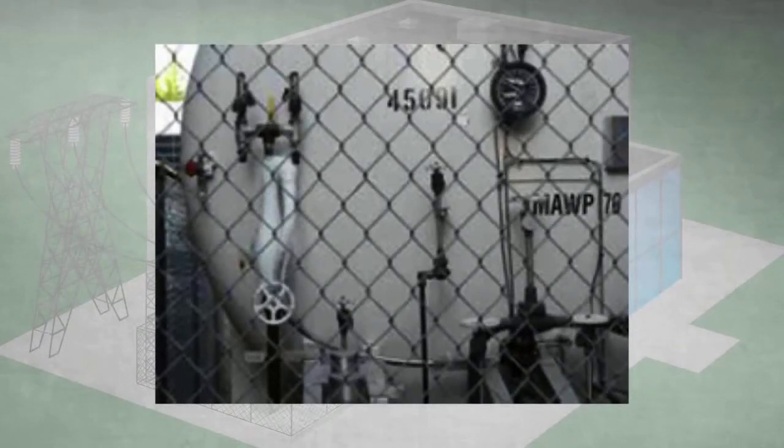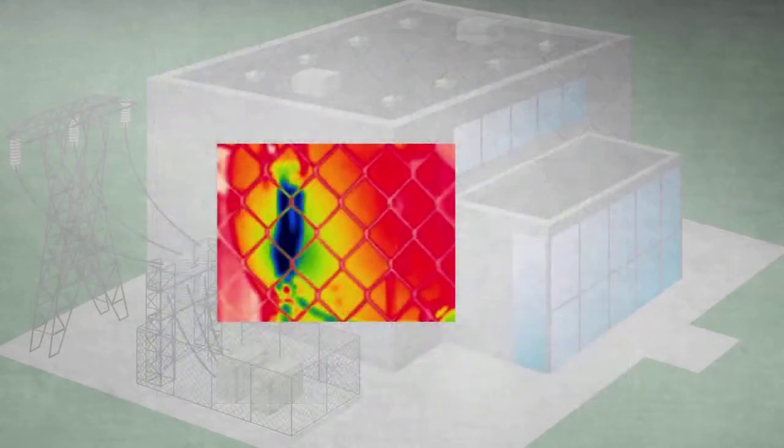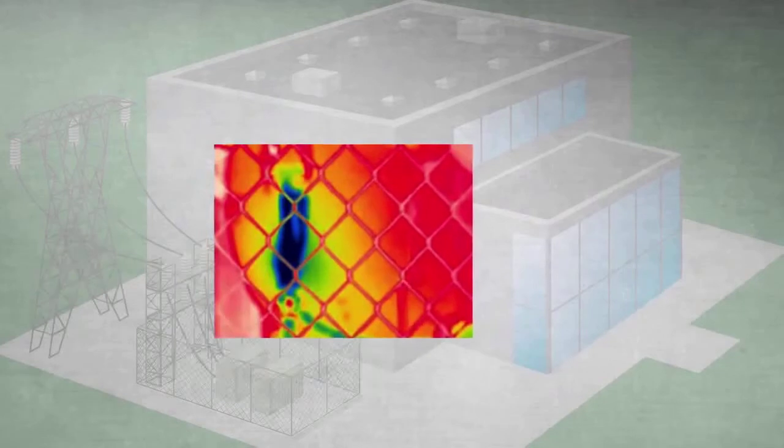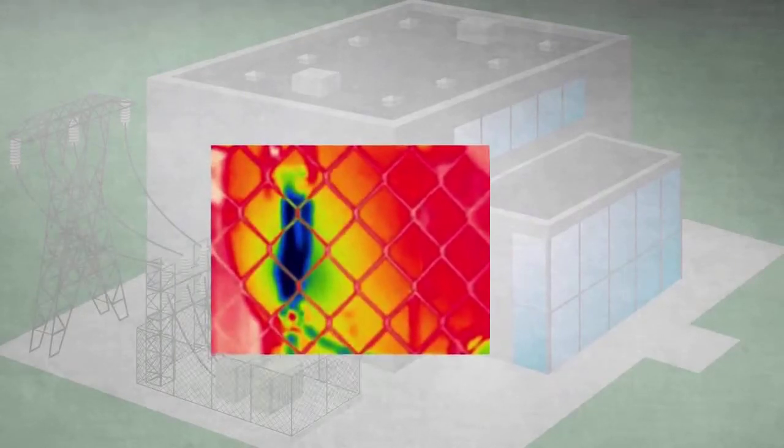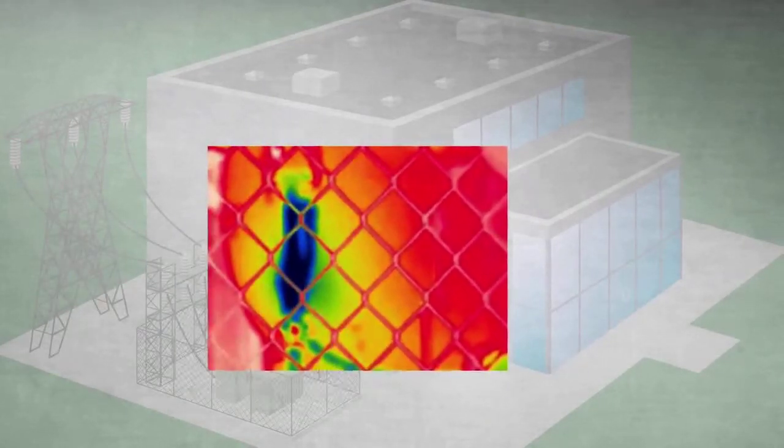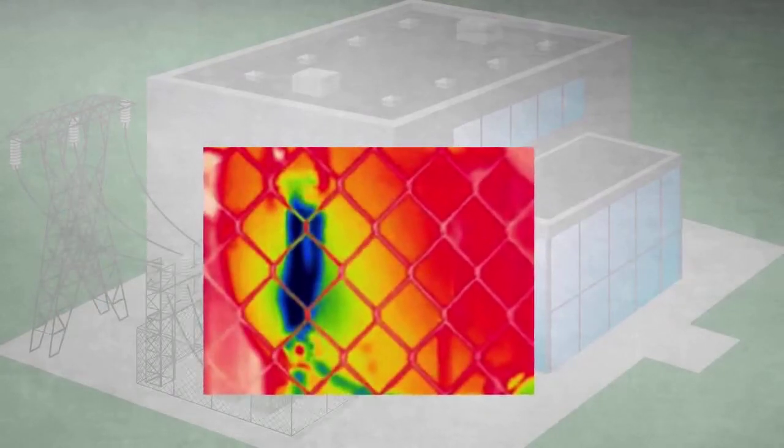In this example, the valve we want to inspect is behind a chain link fence. With a passive autofocus system, the near field subject, the chain link fence, is often what the camera chooses to focus on. Multiple images are often needed in order to get one that will focus on the valve, if it will at all.